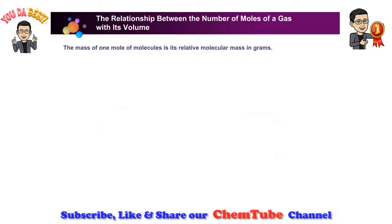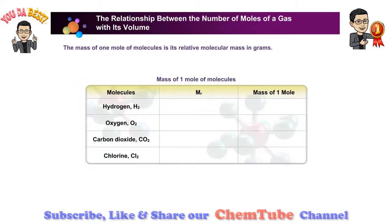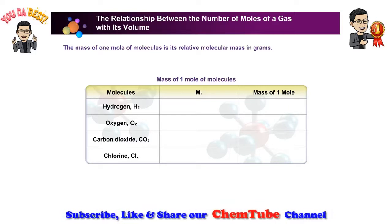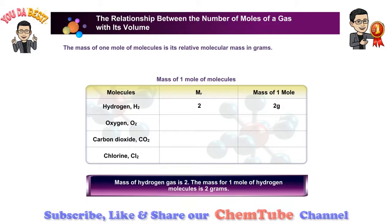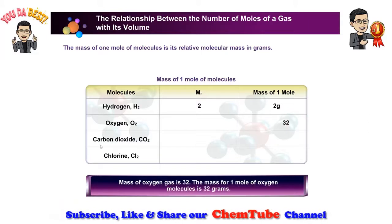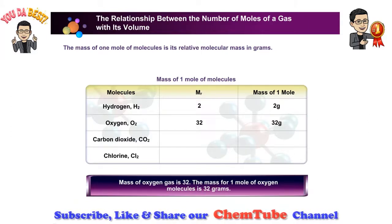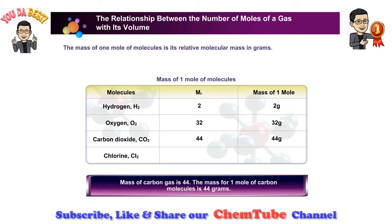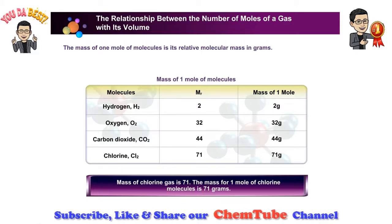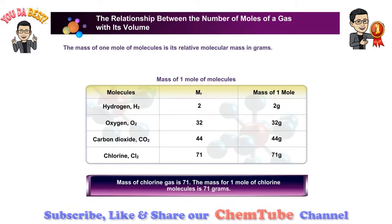The mass of one mole of a molecule is its relative molecular mass in grams. Click on each molecule to see its relative molecular mass and the mass of one mole of its molecules. The mass of one mole of hydrogen molecules is 2 grams, one mole of oxygen molecules is 32 grams, one mole of carbon dioxide molecules is 44 grams, and one mole of chlorine molecules is 71 grams.